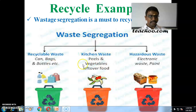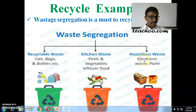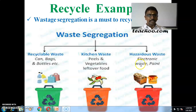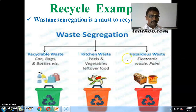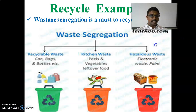Kitchen waste — such as vegetable peels and leftover food — can be used for fertilizers. Hazardous wastages like electronic waste and paint must be kept separately. By this segregation we can save our environment. Biodegradable waste includes kitchen waste; non-biodegradable waste includes recyclable waste and hazardous waste.